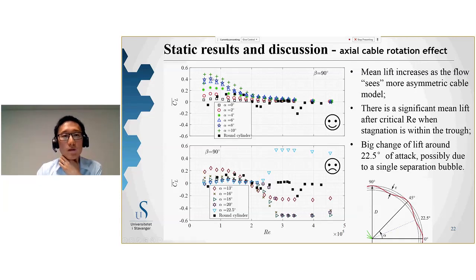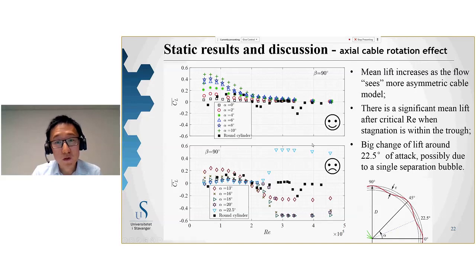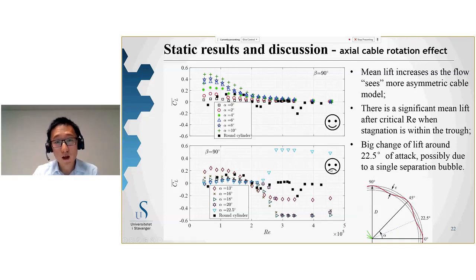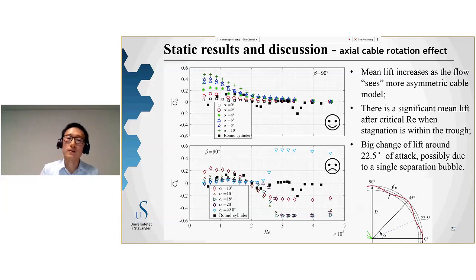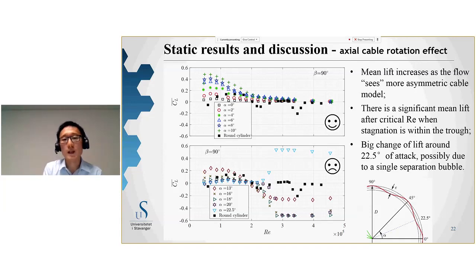For the lift coefficient results at different rotation angles, there is a particularly problematic case: at approximately 22.5 degrees axial rotation, we observe quite significant changes in lift at high wind velocities, and the sign or direction of the lift also flips. This is not desirable and will lead to problems in dynamic response — something we plan to optimize in future work.